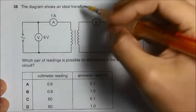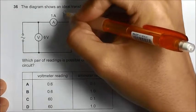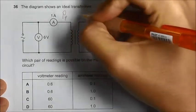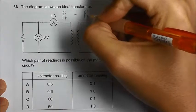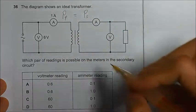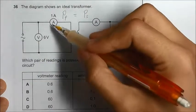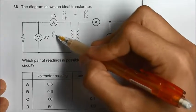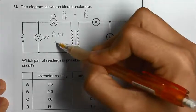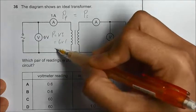We have an ideal transformer, so the ideal transformer means that the power on the primary coil is the same as the power on the secondary coil. The power of the primary coil is VI, so that will be 6 times 1, which is 6 watts.